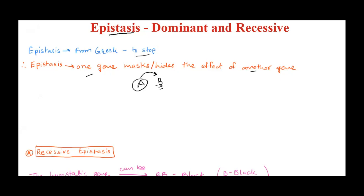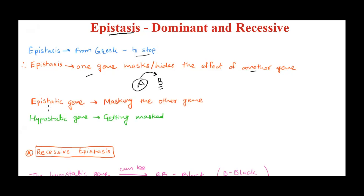Before we go ahead, we should be clear with two terms: epistatic gene and hypostatic gene. The epistatic gene is the gene that is hiding or masking the effect of another gene. You can remember it this way — 'epi' means above, so this gene is above the other gene. The gene that is getting masked, or which is not allowed to express, is called the hypostatic gene. 'Hypo' means under — it is under the effect of the epistatic gene.